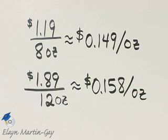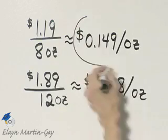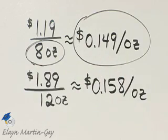So what is the better buy? It's the one where you pay less per ounce. This is the better buy, which means the 8-ounce size is the better buy.